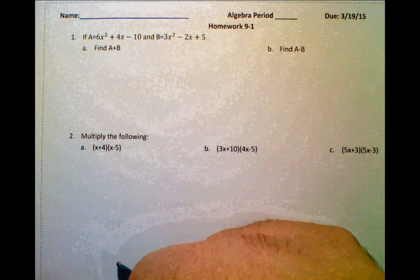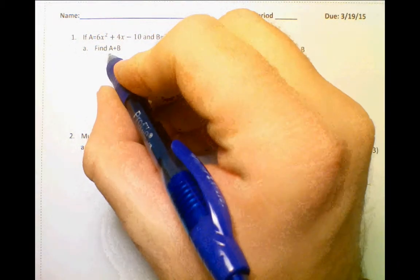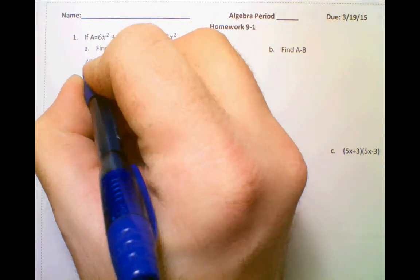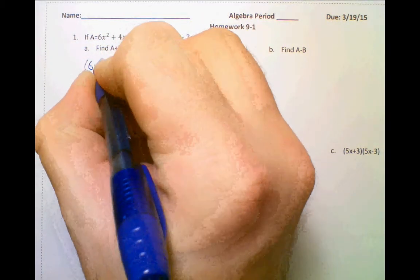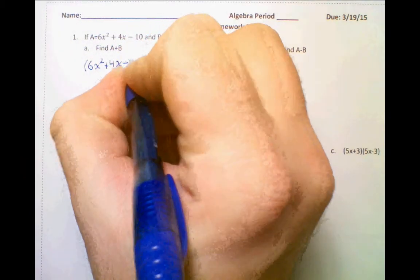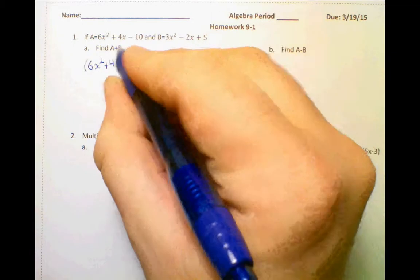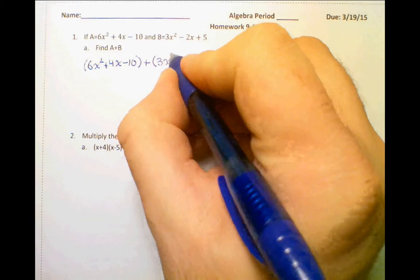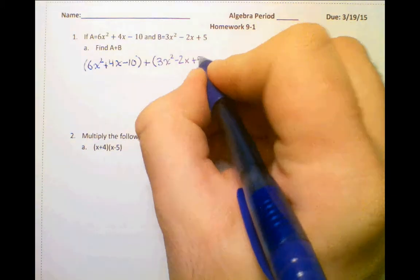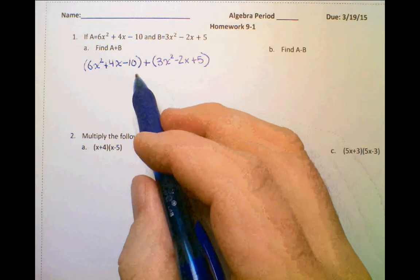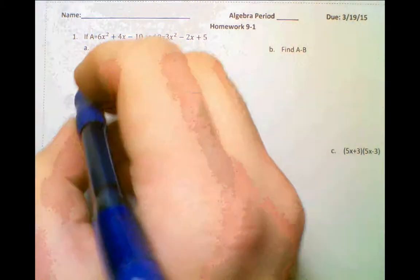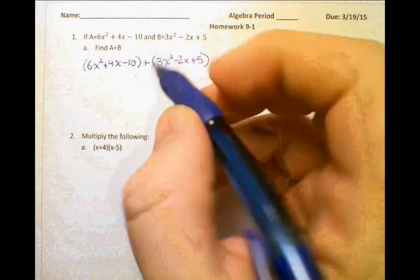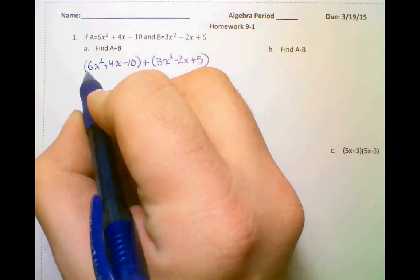What we have to do in this case — the first step — they're asking us to add a and b together. So I'm going to write this out, put parentheses around a, then put a plus sign and replace b with what b is: 3x squared minus 2x plus 5. Now remember, once you do this, you can drop the parentheses. We have a plus sign there, so all we need to do is combine like terms.